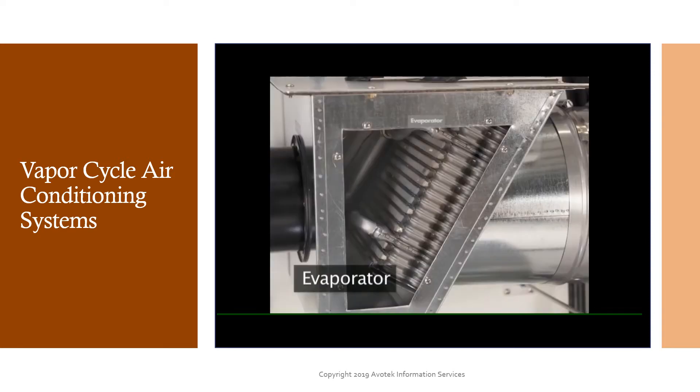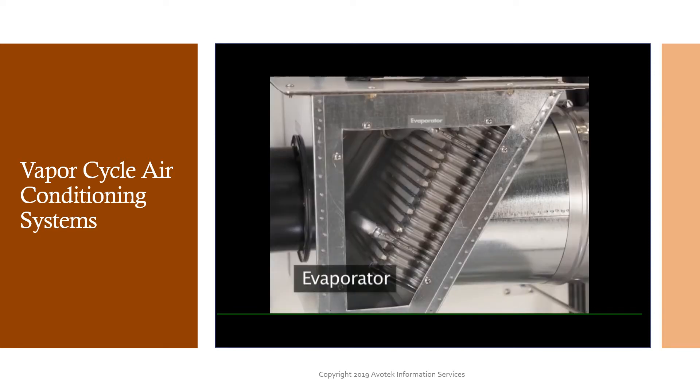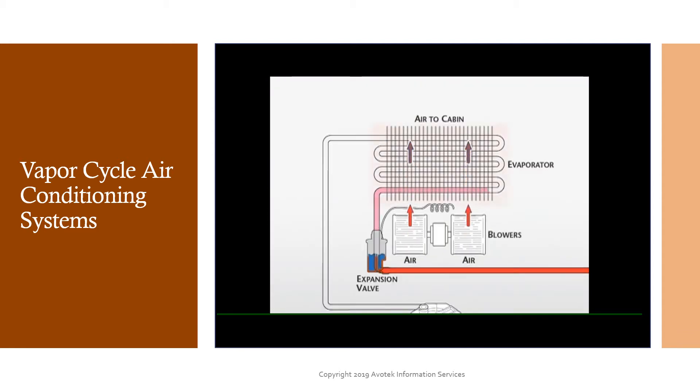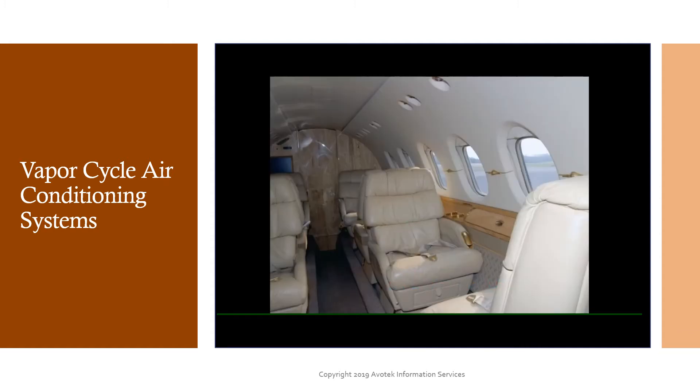The tubing is coiled into a radiator-type assembly known as the evaporator. A fan is positioned to blow cabin air over the surface of the evaporator. As it does, the heat of the cabin air is absorbed by the refrigerant. As this heat is absorbed, the temperature of the air blown across the evaporator drops significantly. This cool air is returned to the cabin, reducing the temperature there.